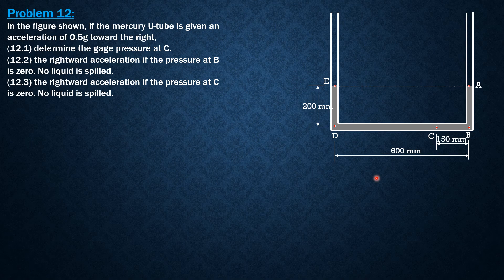For the first question, tangent theta equals AX over G, and it equals whatever the change in vertical distance of the surface here, Y over 0.6 meter. Tangent theta equals AX over G equals Y over 0.6. This is 0.6. Let's first determine Y. AX is 0.5 of G divided by G equals Y over 0.6, so Y is 0.3 meter.